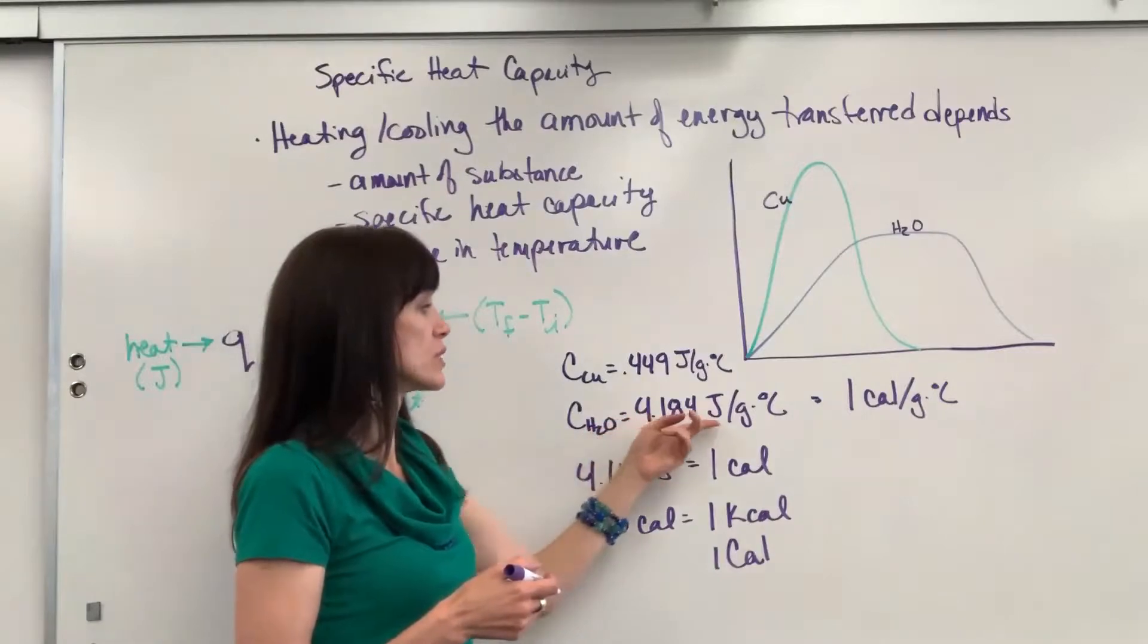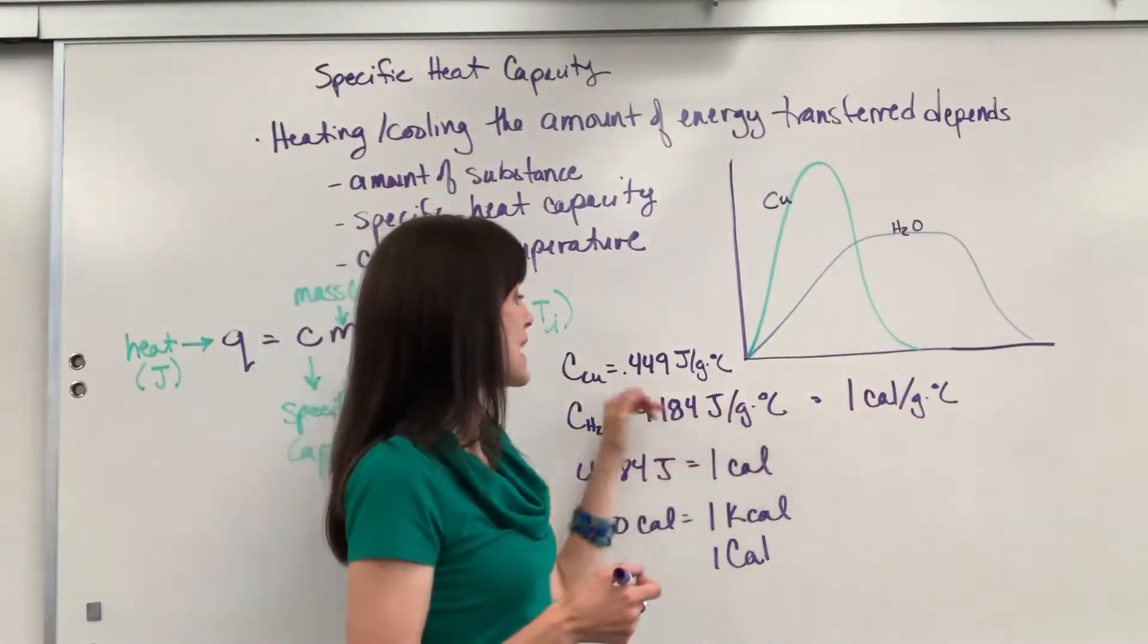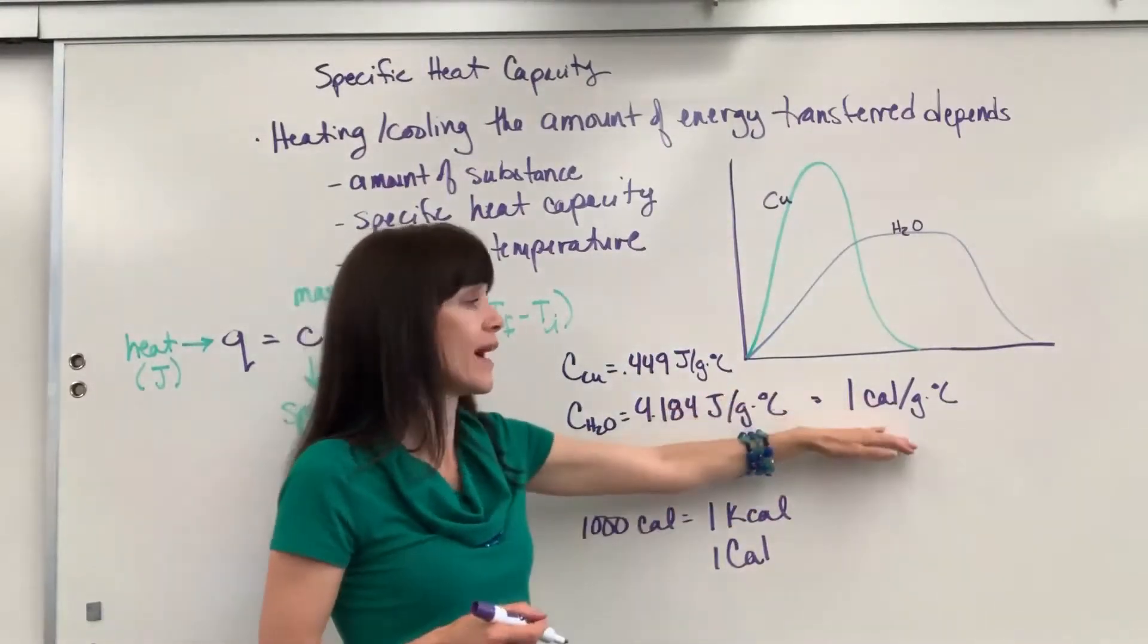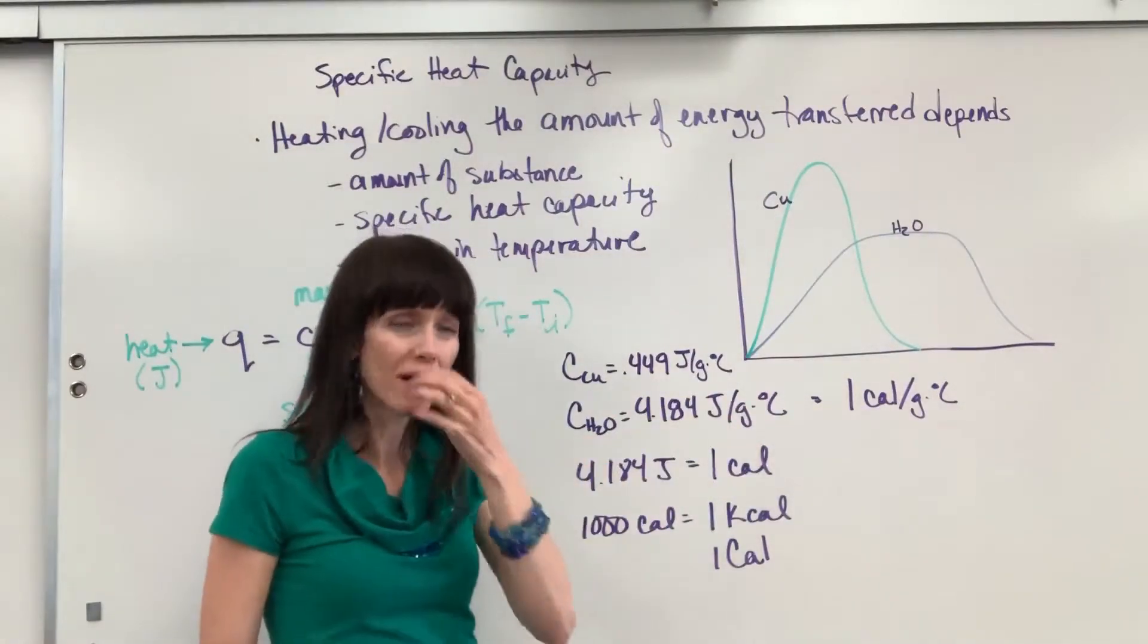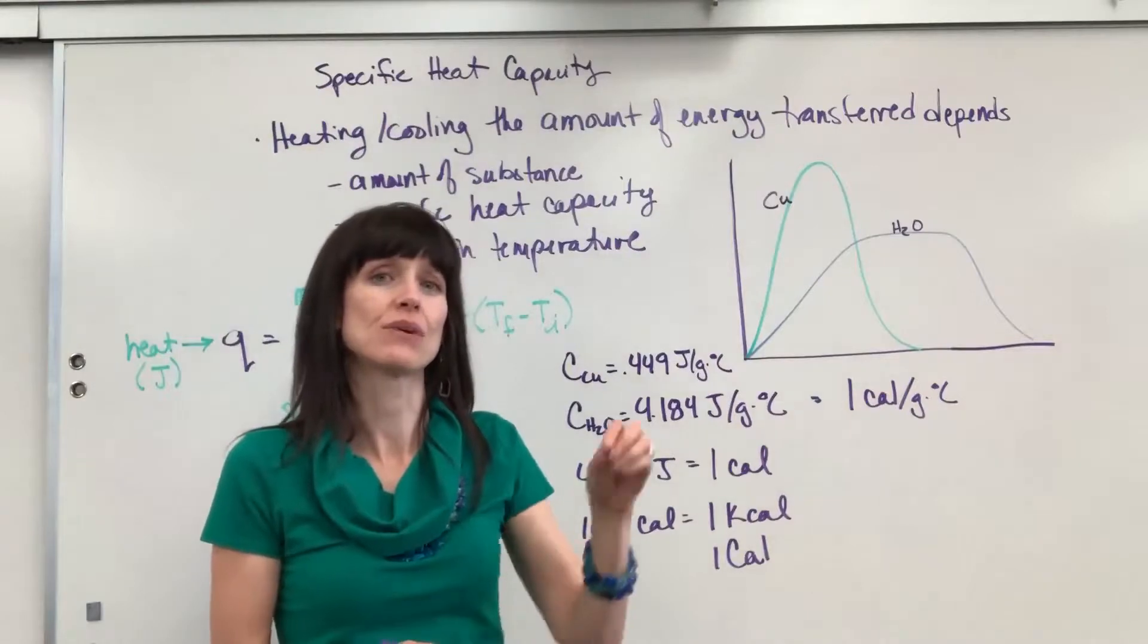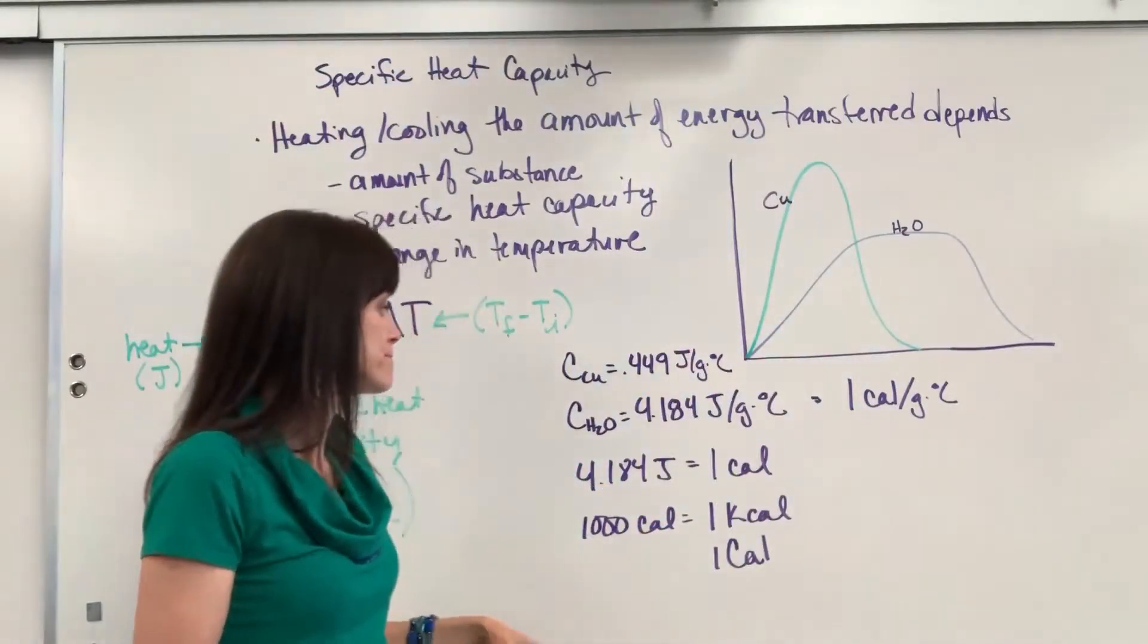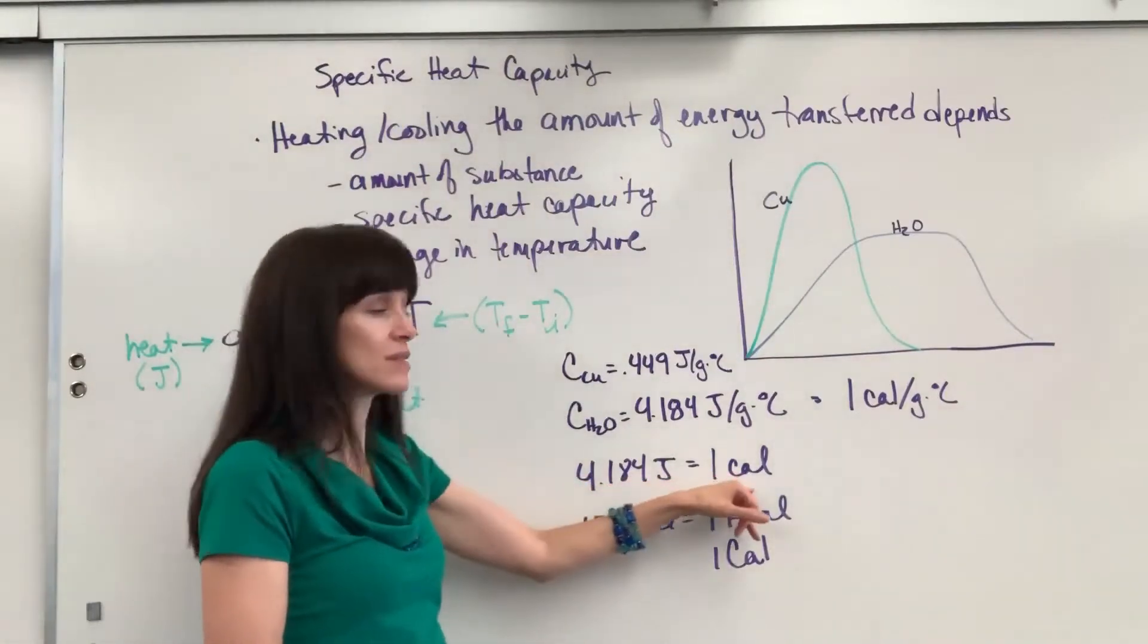Specific heat of water, 4.184 joules for every gram per degree C. We've taken that number because we use it so much in food chemistry and we call that one calorie. So when you're thinking about calories, one calorie is how much energy it takes to raise one gram of water one degree C.